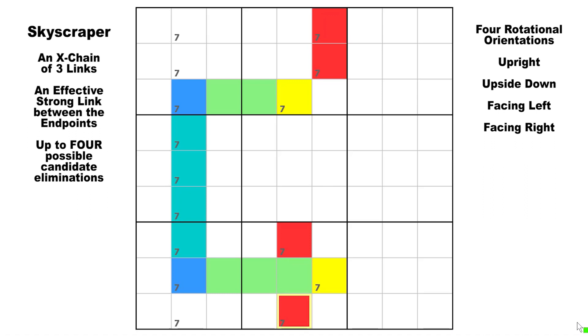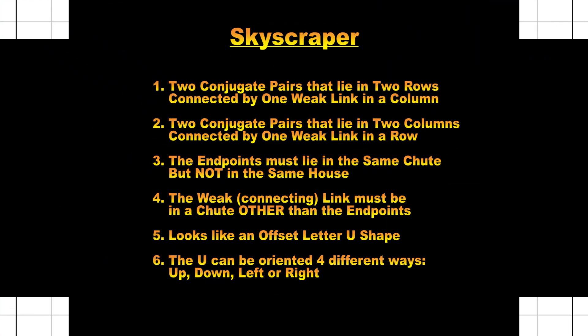The logic works the same for all these configurations — these are all skyscrapers. A skyscraper will be composed of two conjugate pairs that lie in two rows connected by a weak link in a row. The endpoints must lie in the same chute but not in the same house, otherwise you would have an X-wing. The weak connecting link, called the base, must be in a chute other than the endpoints but parallel to it. The pattern looks like an offset letter U, and the U can be oriented four different ways: up, down, left, or right.